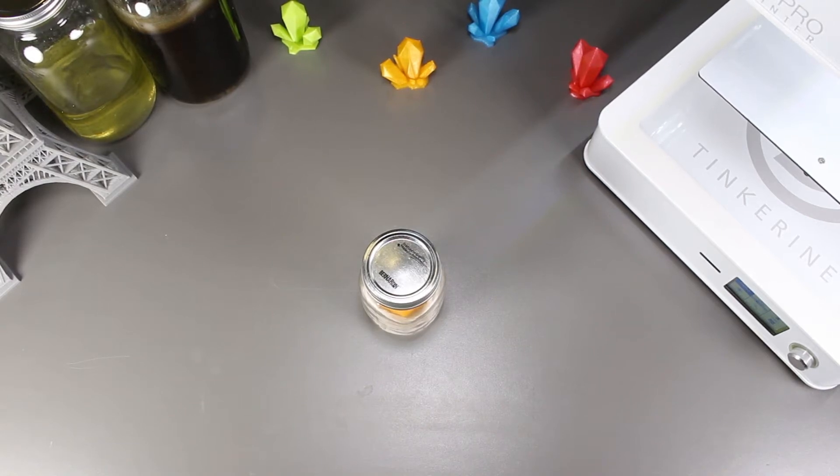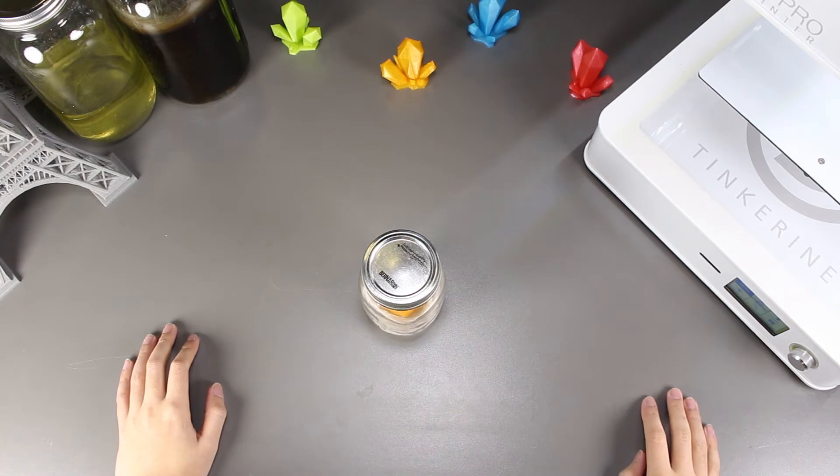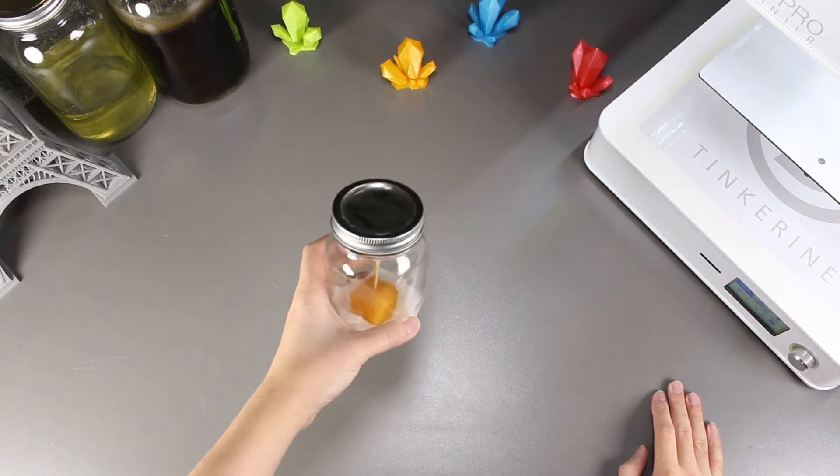Welcome to another episode of Tinkering Experiments. Today will actually be a continuation of the experiment where we used a 3D model coated with a layer of primer and then used acetone to vapor smooth it.